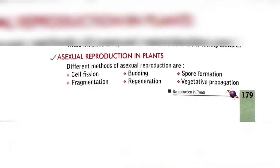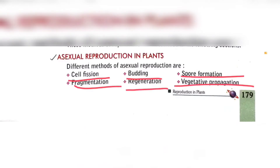Now we will discuss about the different methods of asexual reproduction. Basically there are five types: cell fission, budding, spore formation, fragmentation, regeneration, and vegetative propagation. These are the different types of asexual reproduction. Of them, today we will discuss about some of the types.